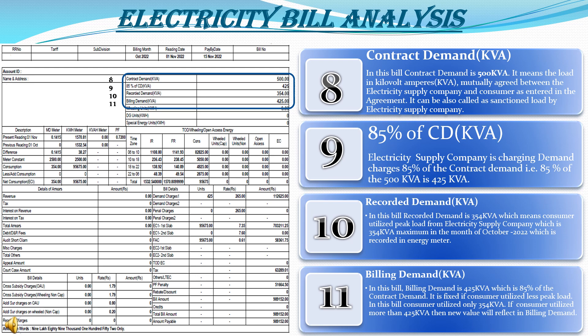The consumer has to utilize up to 500 KVA. If he uses more than 500 KVA, other charges will be applied. The next term is 85% of contract demand — the electricity supply company charges 85% of the contract demand. For 500 KVA, 85% means 425 KVA. The recorded demand in this bill is 354 KVA, which is the actual peak load the consumer utilized from the electricity supply company, maximum in the month of October 2022, as recorded in the energy meter.